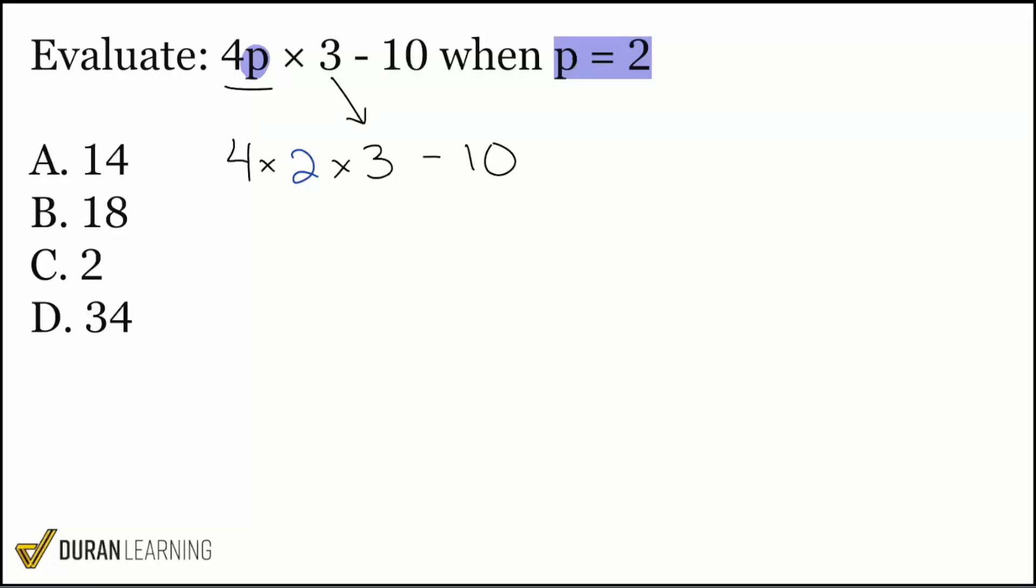So from here, we see that we have 4 times 2, which is 8. 8 times 3 is 24. So I'll do all three of those together to get 24. Then I subtract 10, and that gives me 14. So there we are, everybody. The correct answer here is A, 14. And we are good.